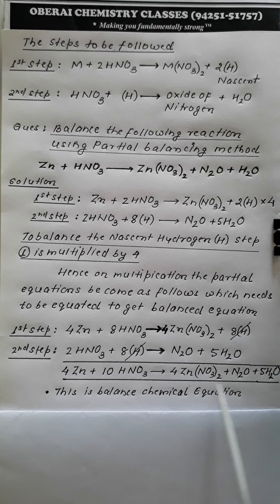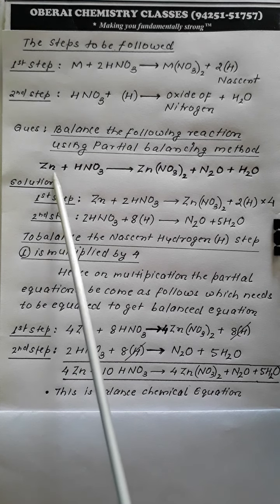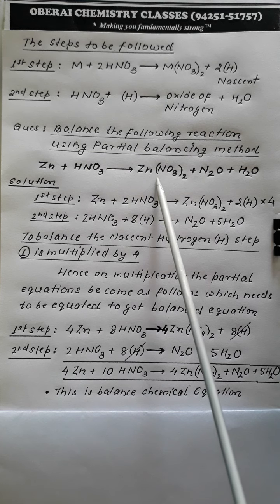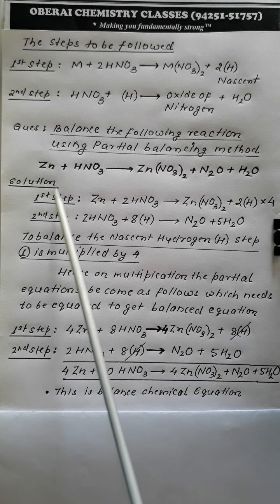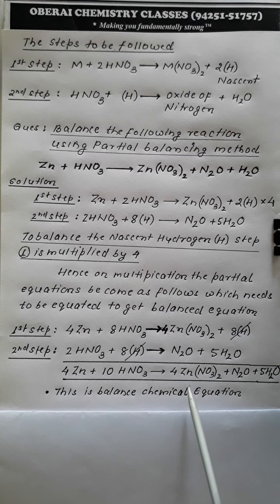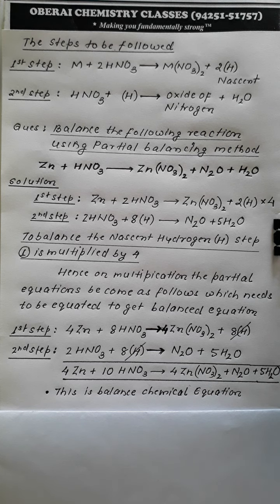So the skeletal reaction was Zn + HNO3 → Zn(NO3)2 + N2O + H2O. The balanced form of this equation using the partial balancing method is: 4Zn + 10HNO3 → 4Zn(NO3)2 + N2O + 5H2O. This is the final balanced chemical equation.